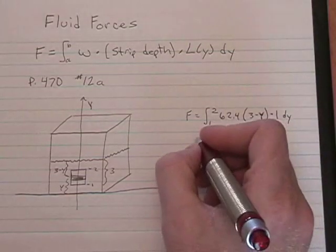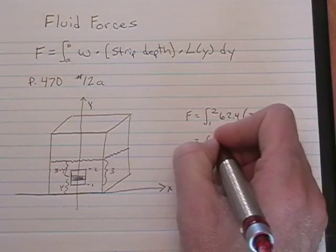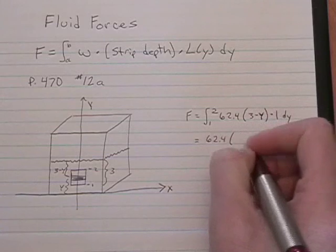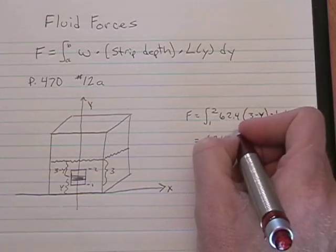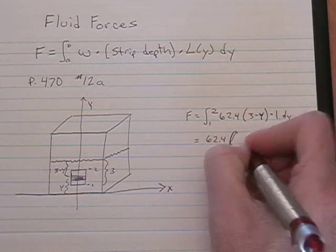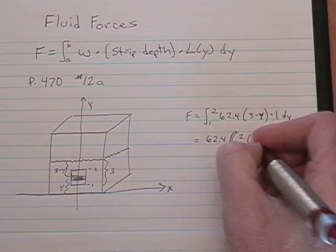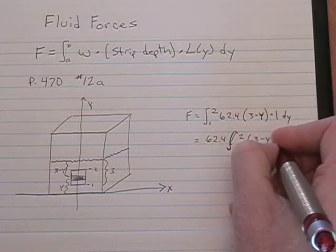Now let's go ahead and simplify this. Factoring out 62.4 times one, we get 62.4. This is supposed to be an integral symbol. Times the integral from one to two. We'll put that in the gag reel. Three minus Y, dy.